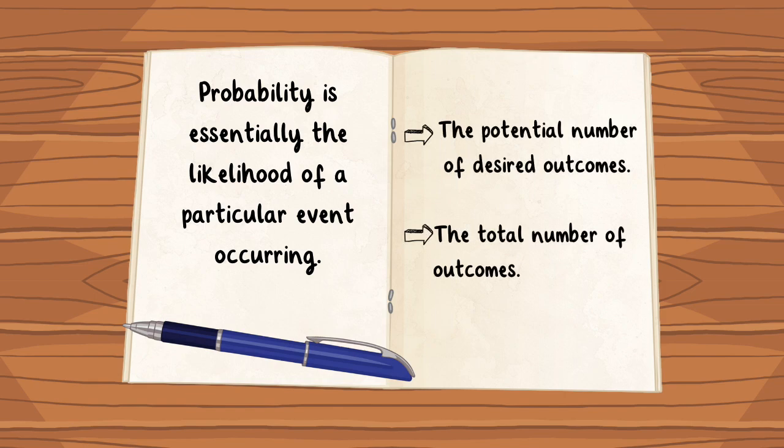To calculate probability, you need to know two factors: the potential number of desired outcomes, and the total number of outcomes.